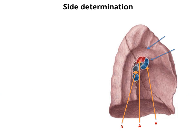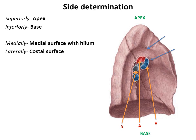The side determination of the lung is done with the help of the general features and parts as discussed. First, we identify the apex which will be directed superiorly. Opposite to the apex lies the base, which will be directed inferiorly. Then we differentiate the two surfaces: the medial surface is identified by the presence of the hilum and will be directed medially, while the costal surface will be directed laterally or towards the thoracic wall.